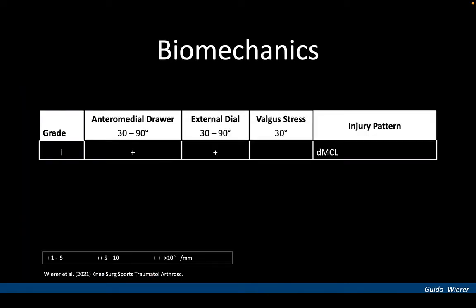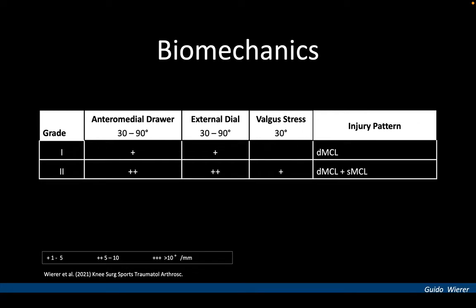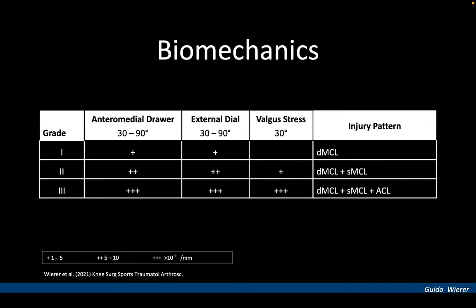In 2021, we proposed a new classification of anteromedial knee instability. This classification is based on a lesion of the deep MCL that leads to minor anteromedial instability without valgus instability. The combined lesion of the deep and superficial MCL leads to moderate anteromedial instability and valgus instability in knee flexion. A concomitant lesion of the anterior cruciate ligament leads to severe anteromedial instability. An injury to the POL leads to increased valgus instability in knee extension, but shows no significant influence on anteromedial instability.